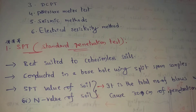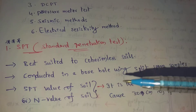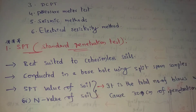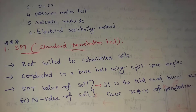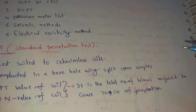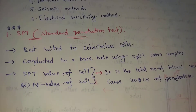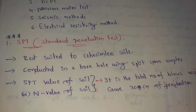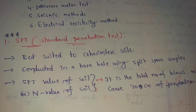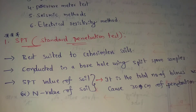The Standard Penetration Test gives Relative Density. The SPT value of soil, also called the N value, is the total number of blows required to cause 30 cm of penetration. If we drive the sampler 30 cm, the total number of blows used is the SPT value, or N value.